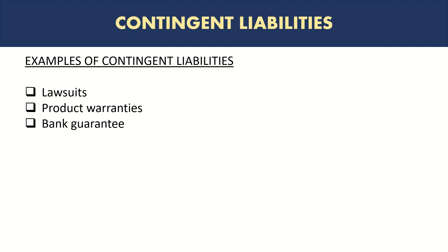For example, if a company sells mobile phones and offers a warranty period of 12 months, then within those 12 months it's uncertain how many customers will come back and ask for warranty claims due to a defective product or issues with the mobile phone. This is again an example of a contingent liability. Another example is a bank guarantee.